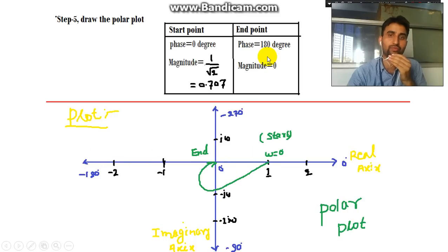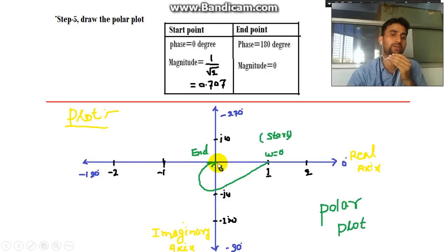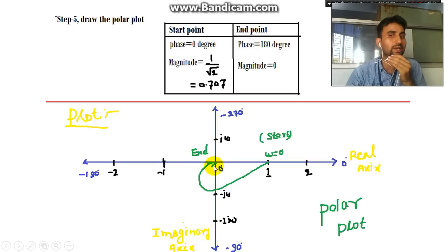The plot ends at minus 180° where magnitude equals 0. You might wonder why it doesn't cross the 180° axis — it would only cross that axis if the phase angle reached minus 270°. Since our end phase is minus 180°, the plot ends right at the negative real axis. The magnitude being 0 at that point means the curve ends at the origin. If the magnitude were 1 or 2 at that angle, the endpoint would be further out. Thanks for watching.